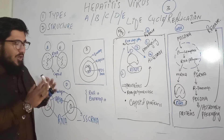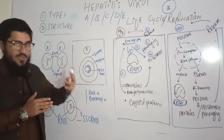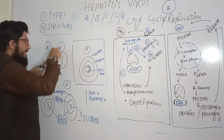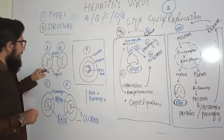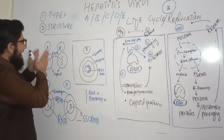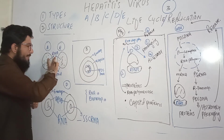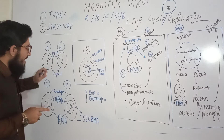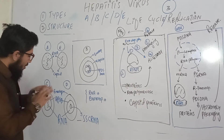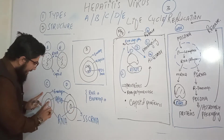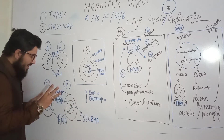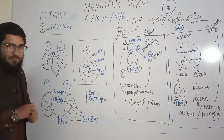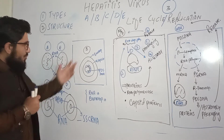Now for the common points among A, E, C, and D. Hepatitis A and E both have RNA as their nucleic acid and a protein layer called the capsid — so we call A and E nucleocapsid hepatitis viruses, meaning they have only a nucleocapsid. What they don't have is an envelope. Hepatitis C and D, however, have RNA, a capsid, and an envelope — three components.